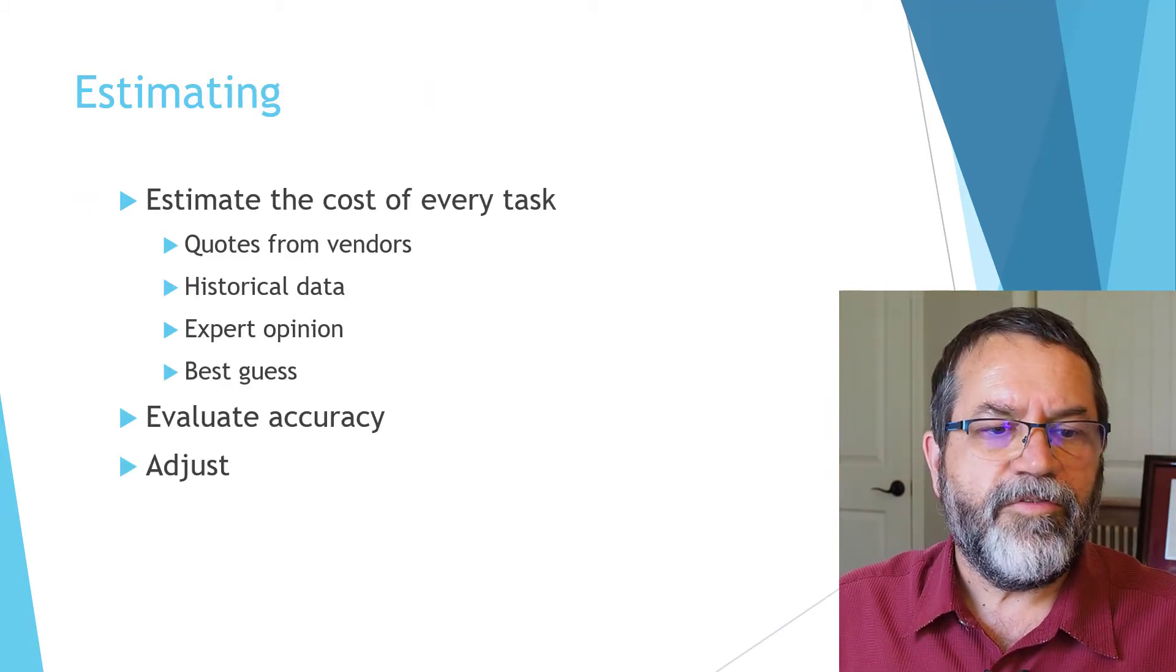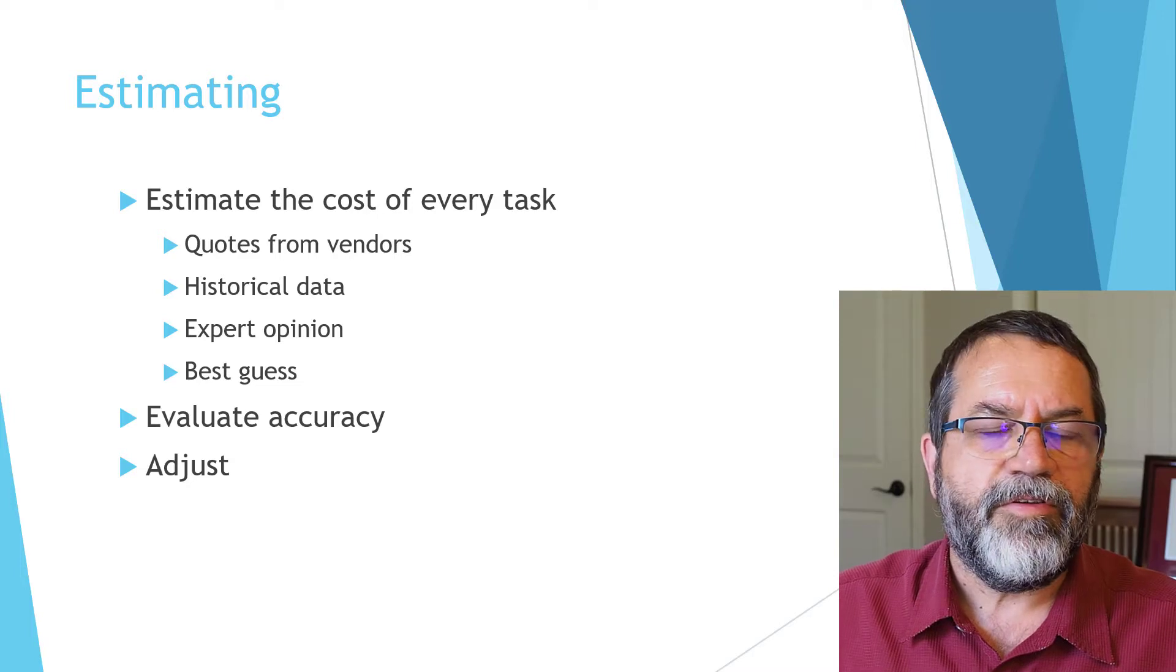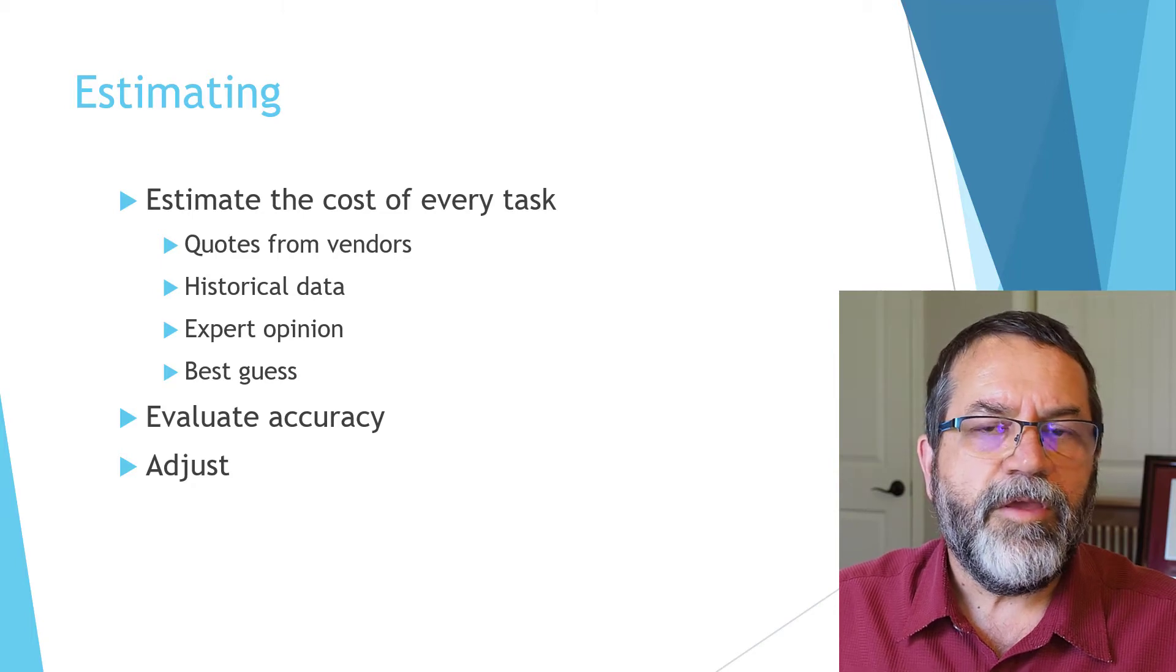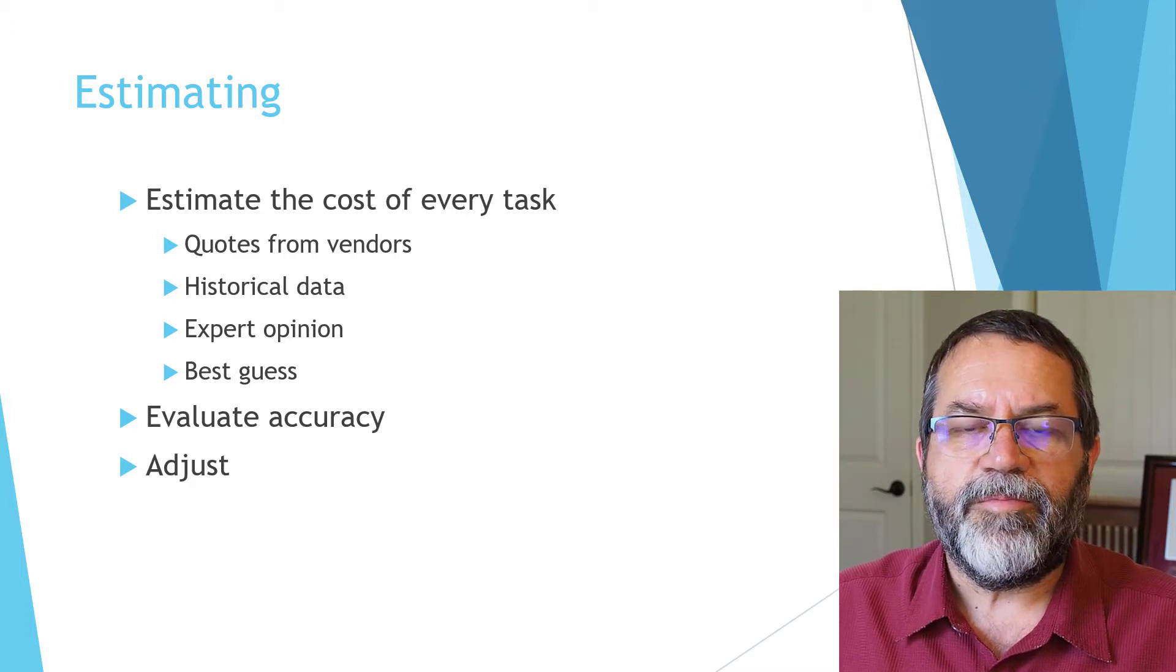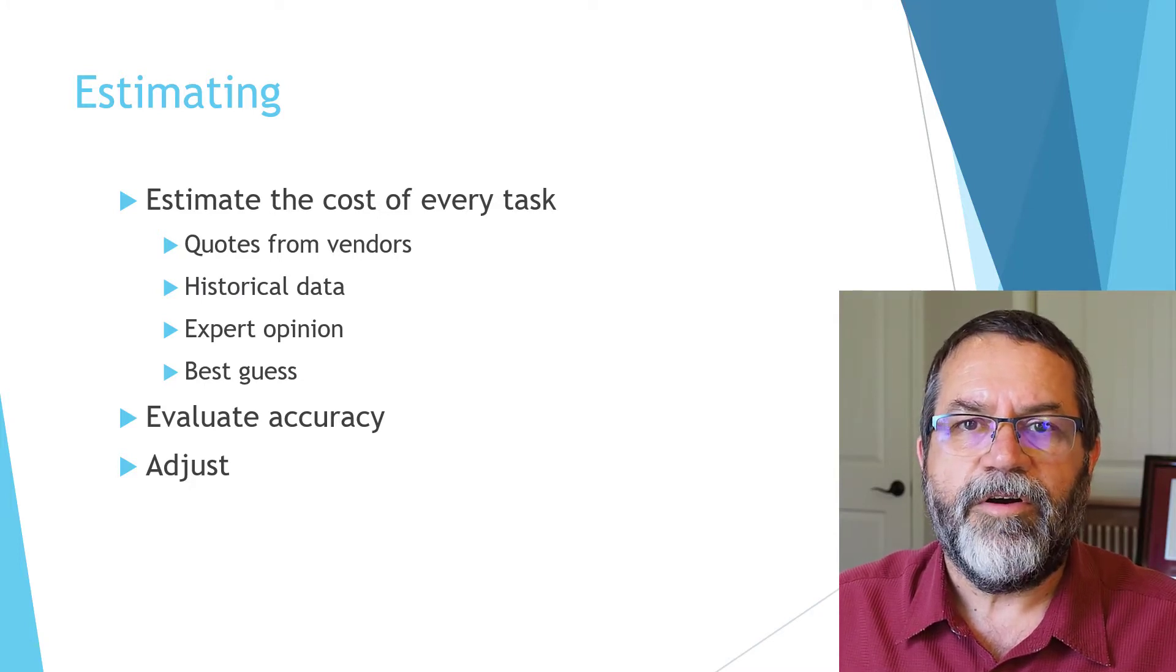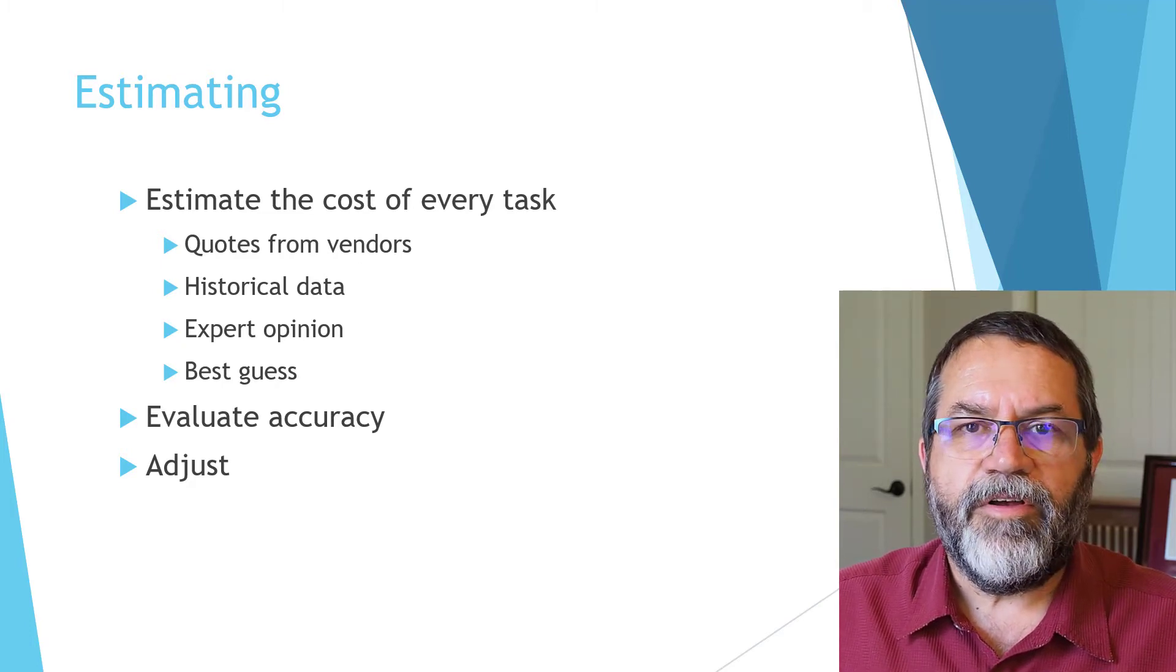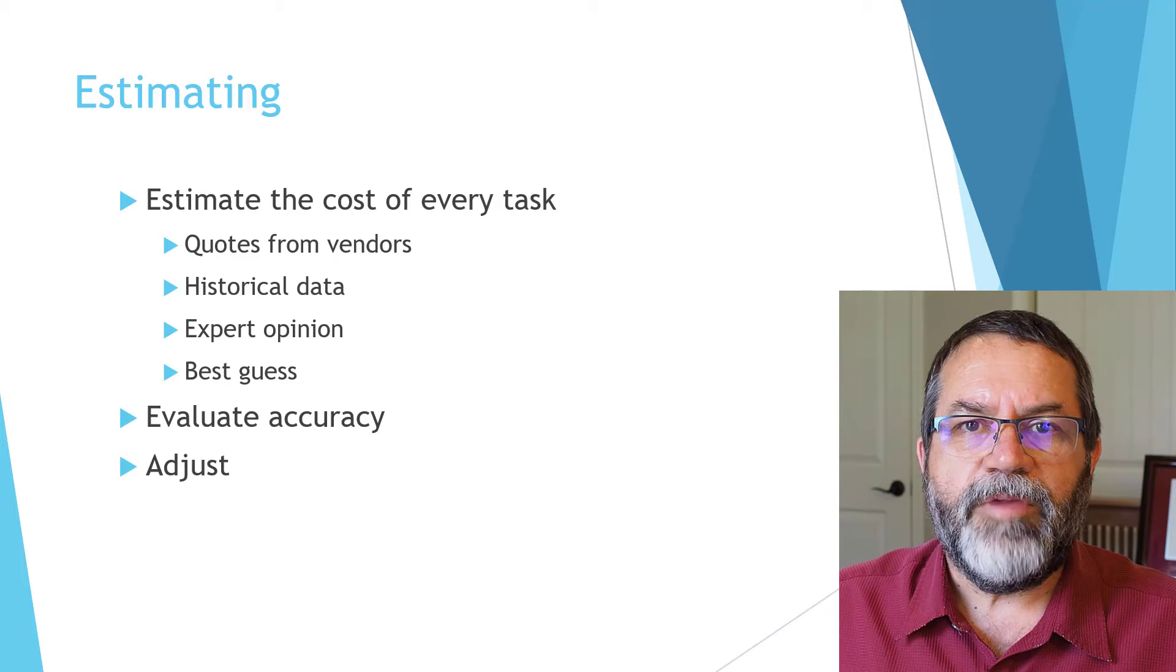For estimating, there's three basic steps. First, you estimate the cost of every task in your work breakdown structure. You can do that by getting quotes from vendors, using historical data, relying on expert opinion, or giving it your best guess. Then you have to evaluate how accurate you feel your estimate is, and based on that, sometimes you need to make some adjustments.